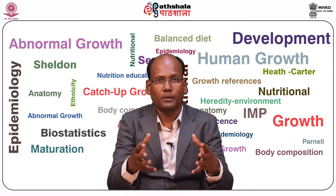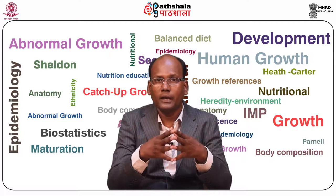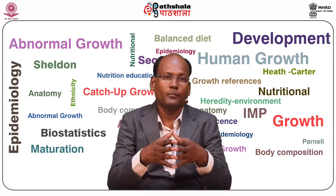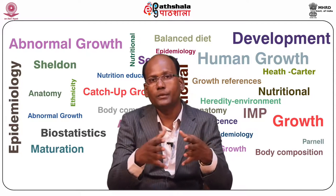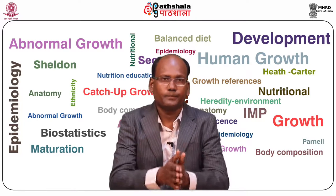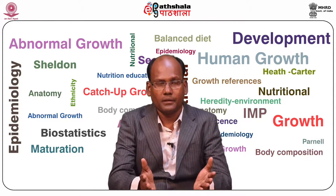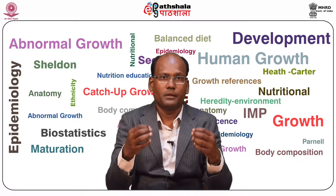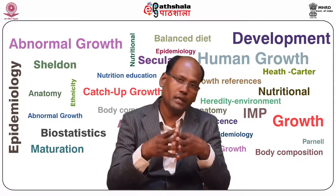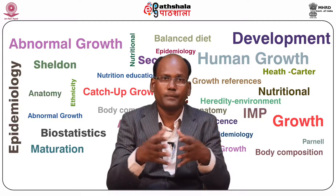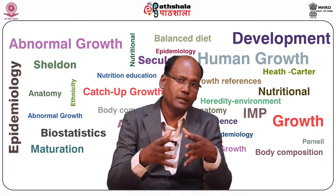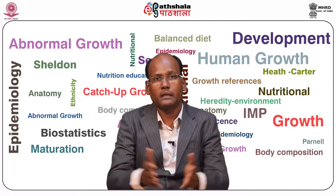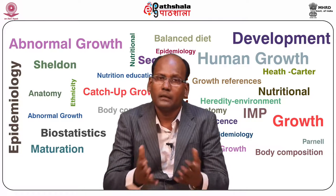Tetanus occurs in all parts of the world but is most frequent in hot and wet climates where the soil contains a lot of organic matter. The estimated global number of deaths due to tetanus decreased from 356,000 in 1990 to 59,000 in 2013. In India, tetanus is an important endemic infection. Behaviors such as poor hand washing and delivery practices, traditional birth customs, and ignorance of immunization are important factors. Prior to the national immunization program, an estimated 0.35 million children died annually due to neonatal tetanus. An estimated 70,000 cases still continue to occur largely in Uttar Pradesh, Madhya Pradesh, Rajasthan, Odisha, Bihar and Assam.